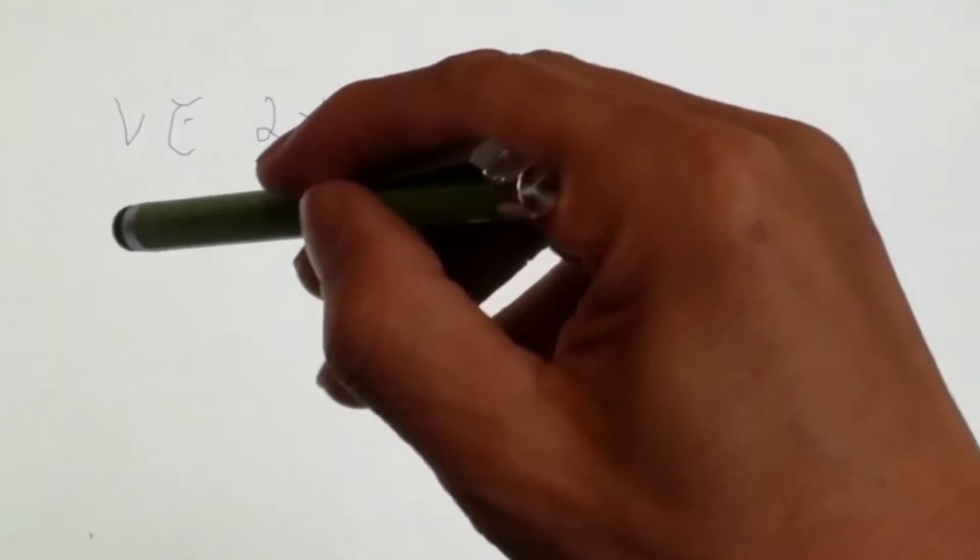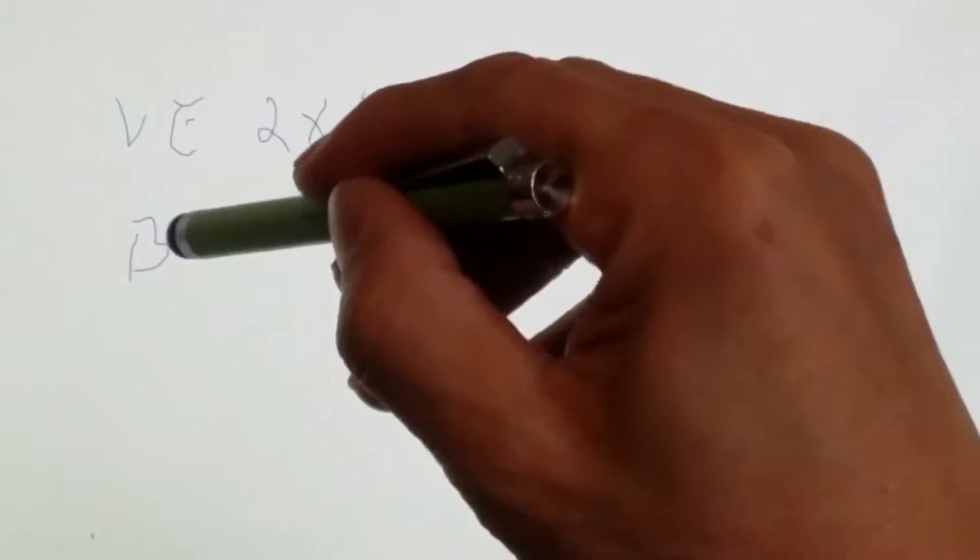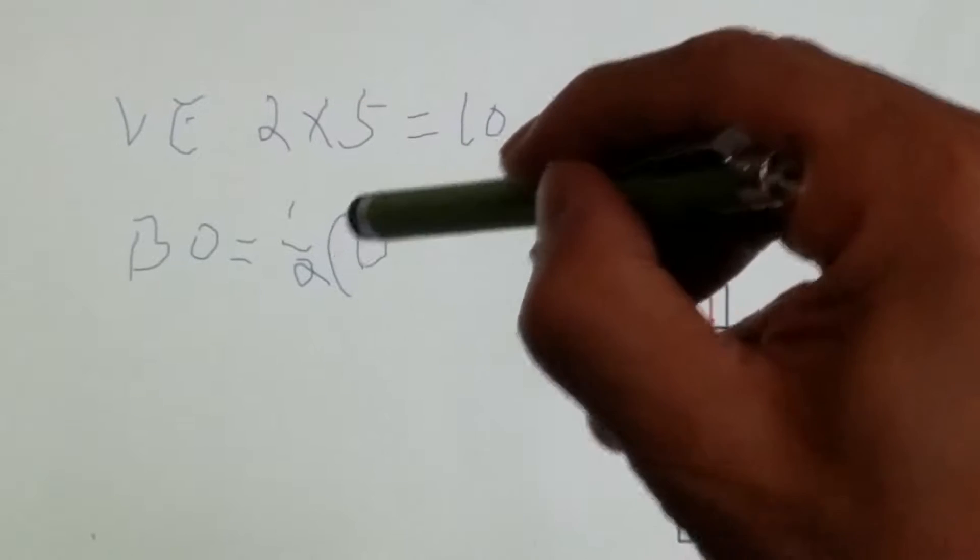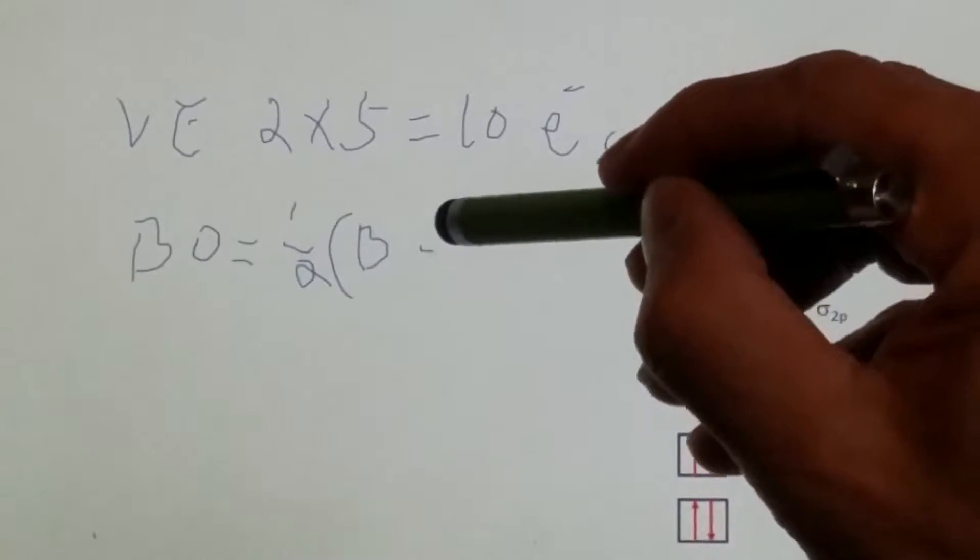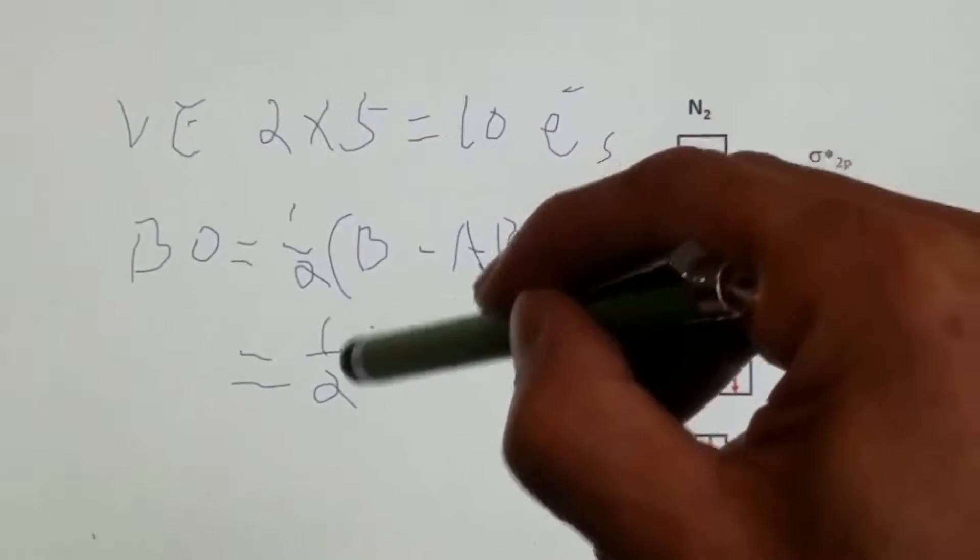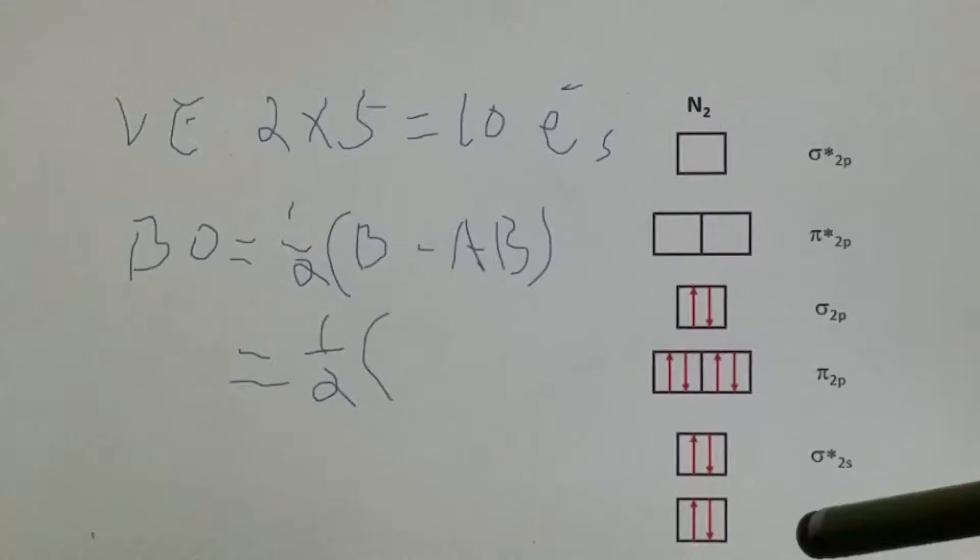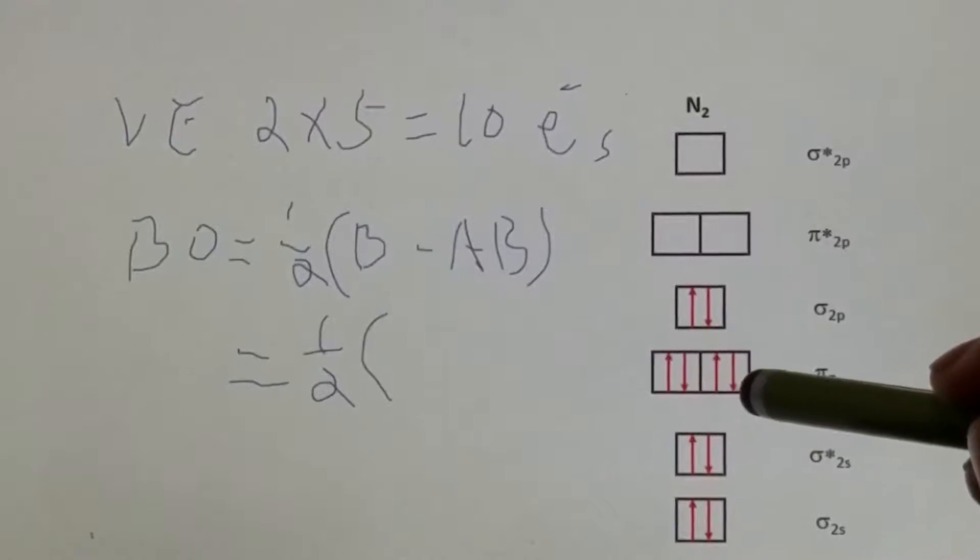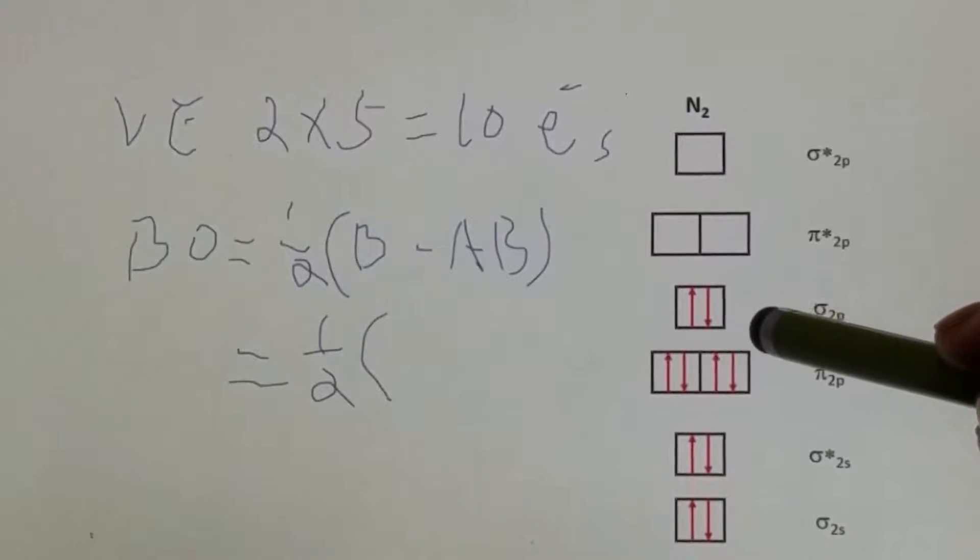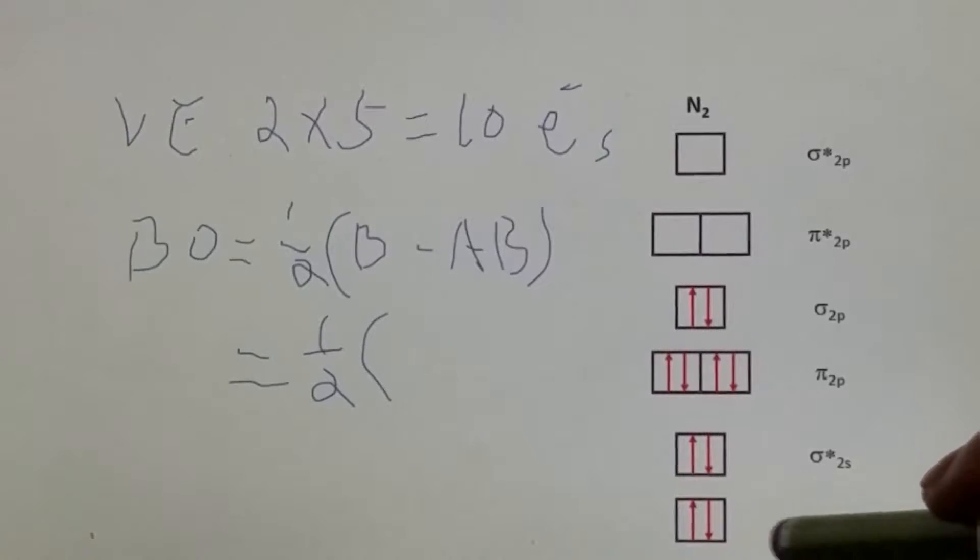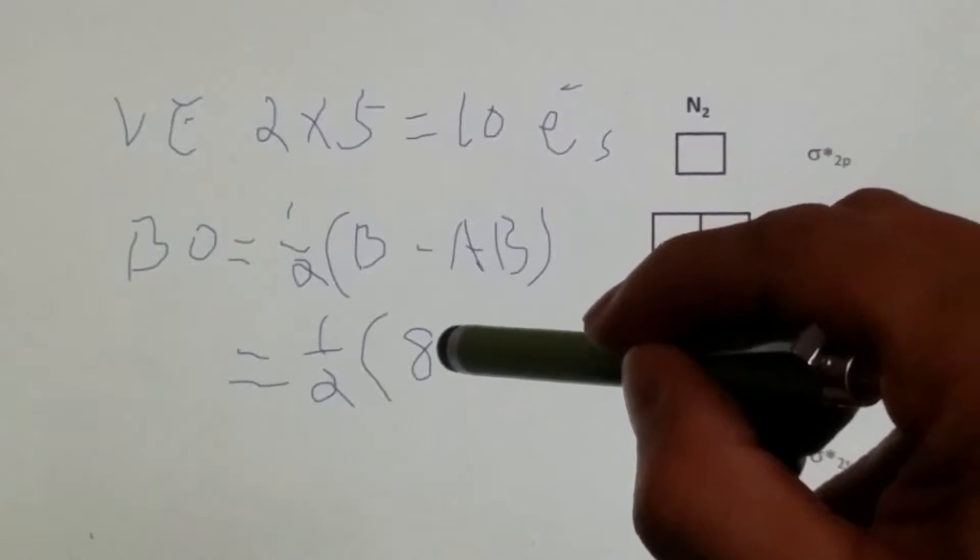Now let's calculate the bond order. One half bonding electron subtracted by anti-bonding. Bonding: sigma 2s, that's 2, pi 2p, that's 4, already 6, sigma 2p, that's 8. 2 plus 4 plus 2 equals 8 bonding electrons.